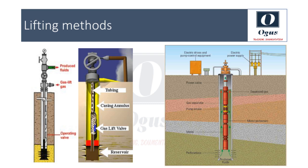ESP or electrical submersible pumps are centrifugal pumps installed downhole for handling large volumes of preferably light and low viscosity crude oil and water mixture. PCP or progressive cavity pumps are helical gear pumps used for wells characterized by highly viscous fluid and high sand cut. These positive displacement pumps are so called due to the continuously reducing cavity or area as the fluid progresses.